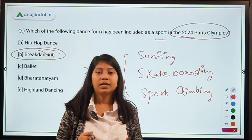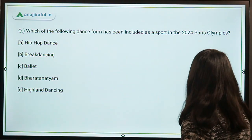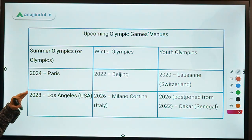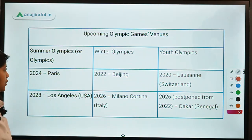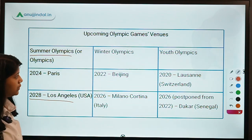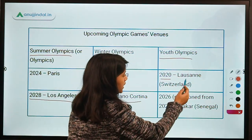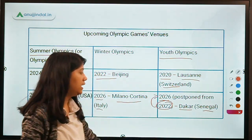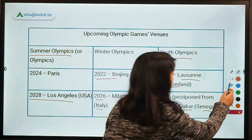Break dancing will make its appearance in the 2024 Paris Olympics, while Surfing, Skateboarding, and Sport Climbing will be in Tokyo Olympics 2021. Here is a table showing the Olympic Games schedule with venues and years. You can take a screenshot to remember upcoming tournaments. 2024 Summer Olympics in Paris; 2028 in Los Angeles, US; 2022 Winter Olympics in Beijing; 2026 Winter Olympics in Milano Cortina, Italy; Youth Olympics 2022 postponed to 2026 in Dakar, Senegal.